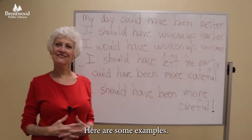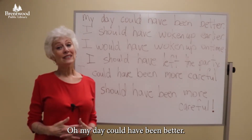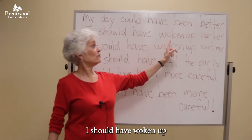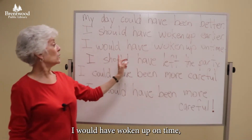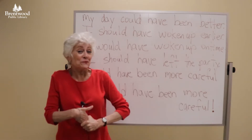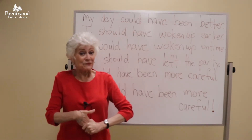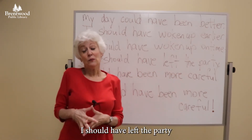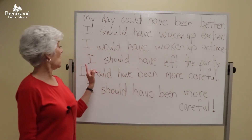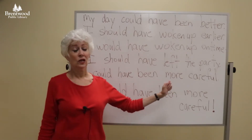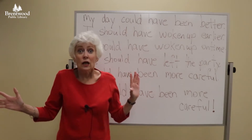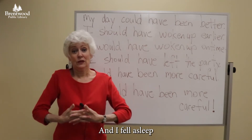Here are some examples. Julia, how was your day? My day could have been better. First, I should have woken up earlier. I would have woken up on time, except I was out at a party last night and I got home really late. I should have left the party before 3am. Anyway, I was already late and I was rushing, and I could have been more careful. I really should have been more careful, but because I was rushing to work, I left my coffee home and I fell asleep at my desk.